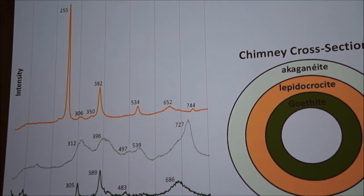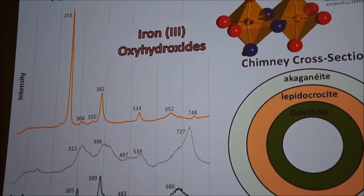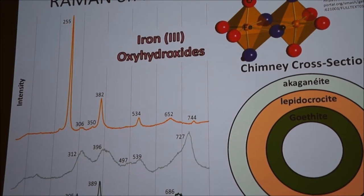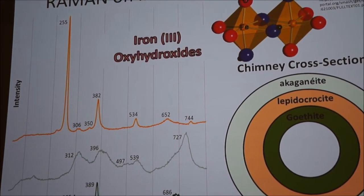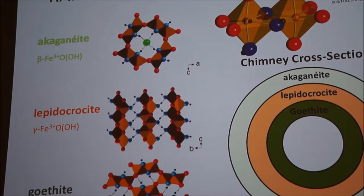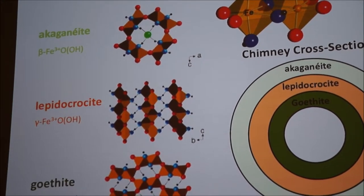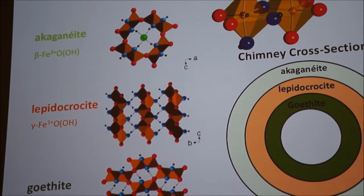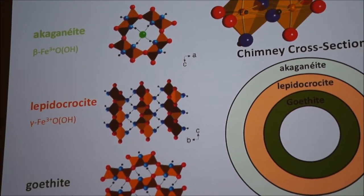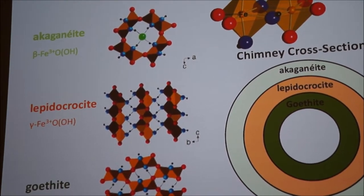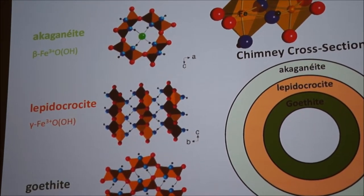All of them are composed of this motif of two octahedra attached together, sharing an edge. But those motifs polymerize differently in each one. So we have akaganeite with the little rings, lepidocrocite has the little strands, and then goethite has like a checkerboard pattern.